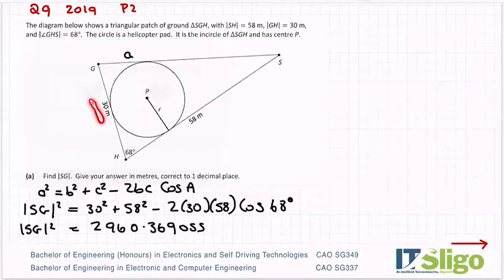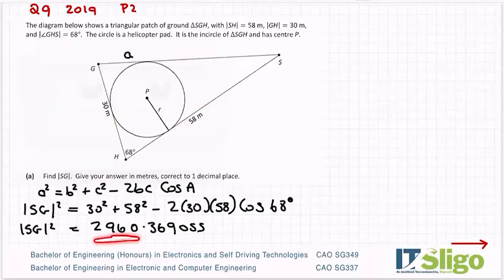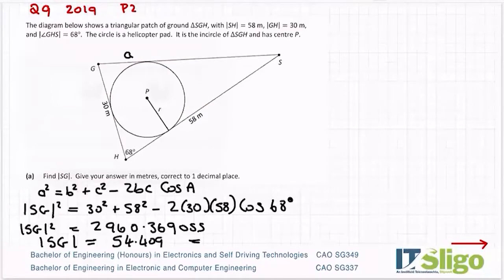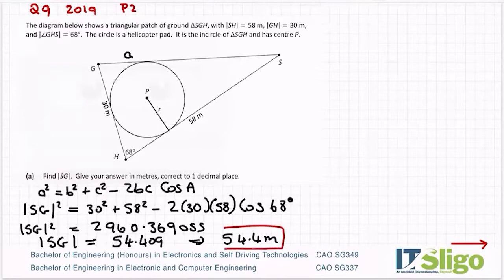Keep an eye on the magnitude: you'd expect SG to be in the ballpark of the other sides, not 2900. That flags that the left-hand side is a squared value, so take the square root of 2960.369. Use the answer button to keep all decimal places, giving 54.409, or to one decimal place: SG = 54.4 metres.